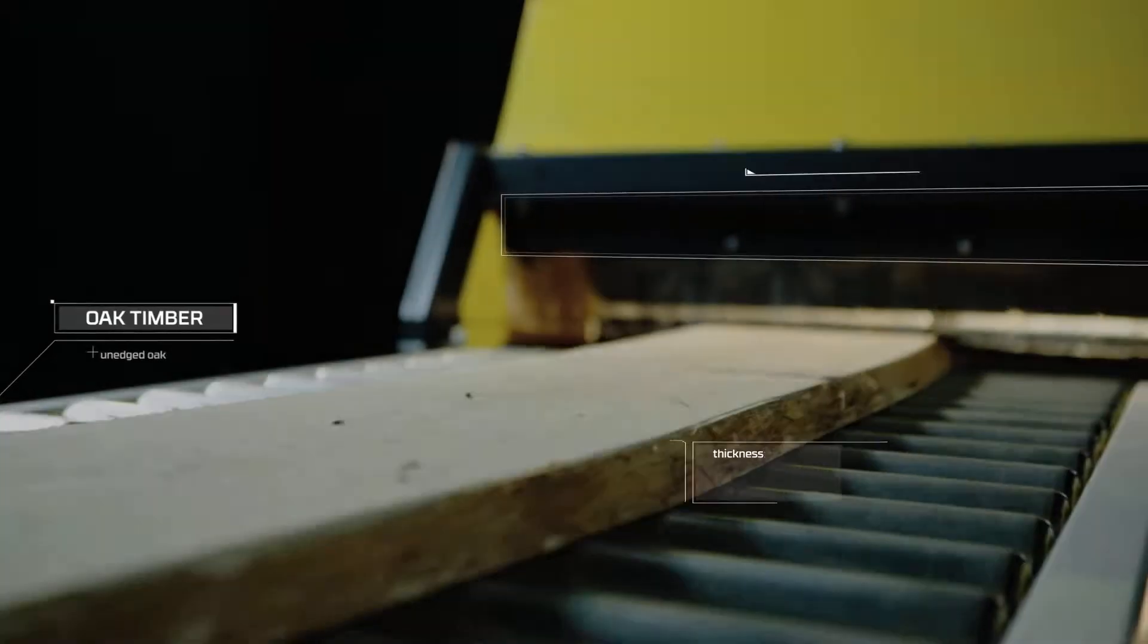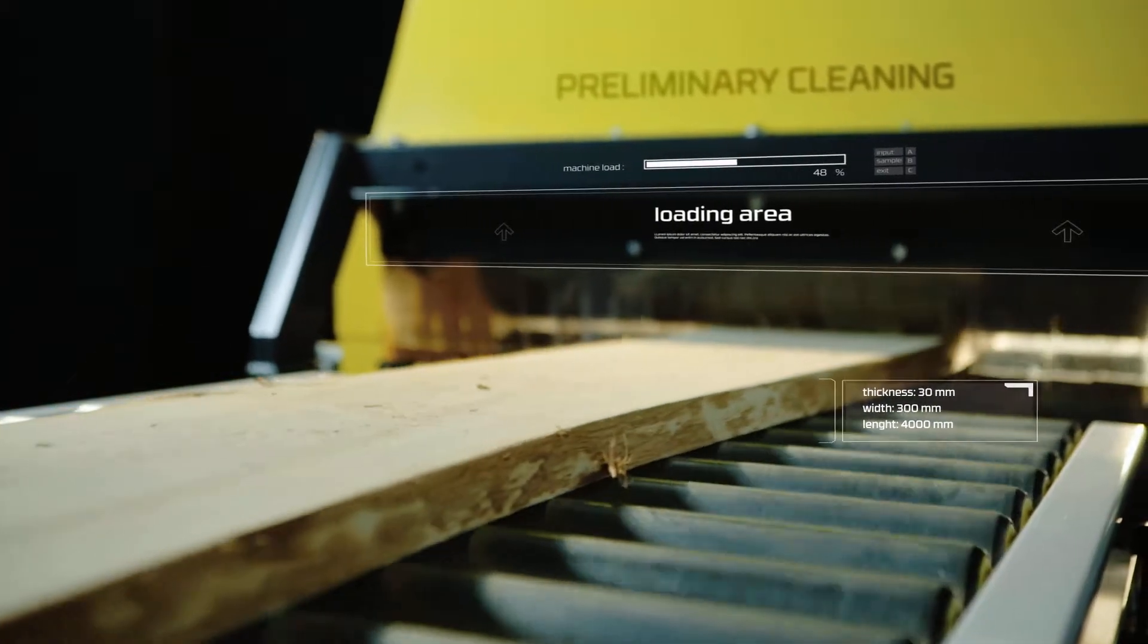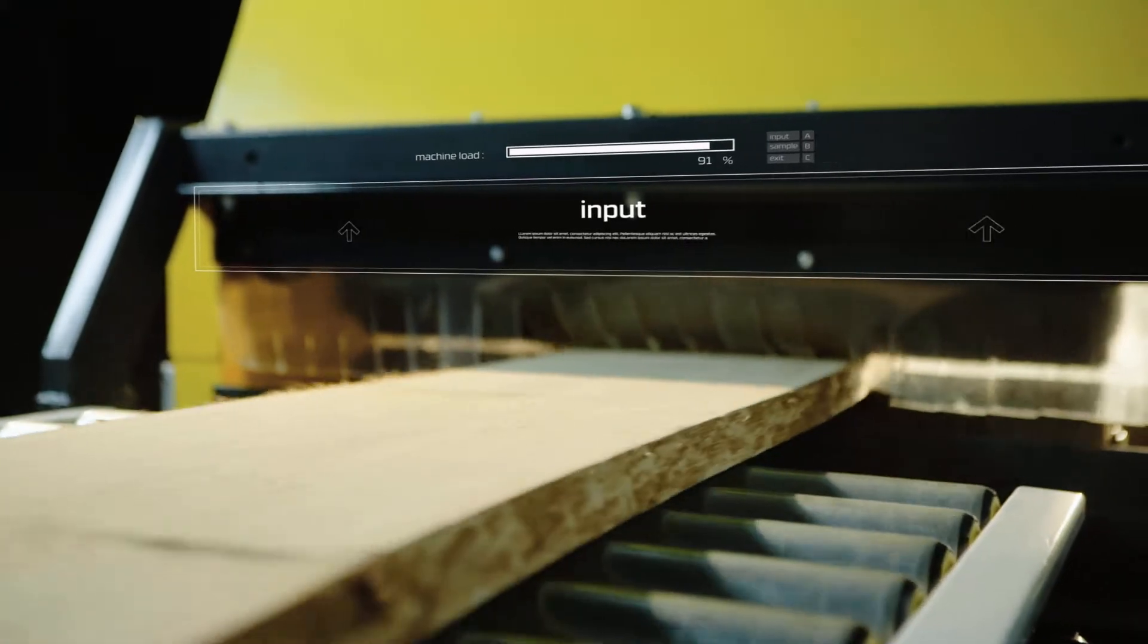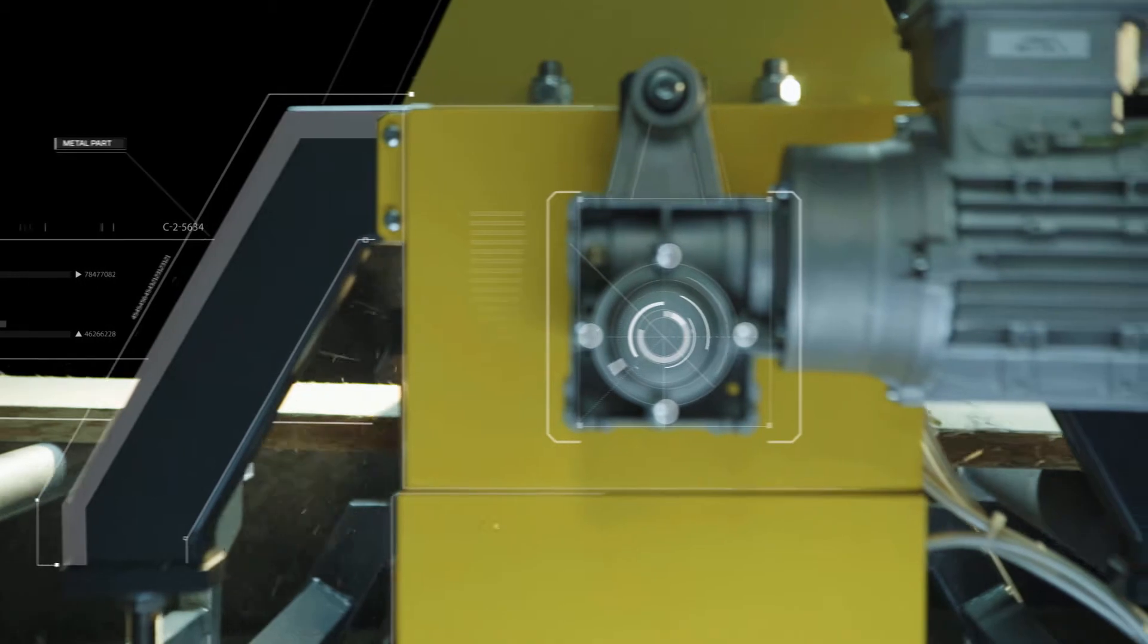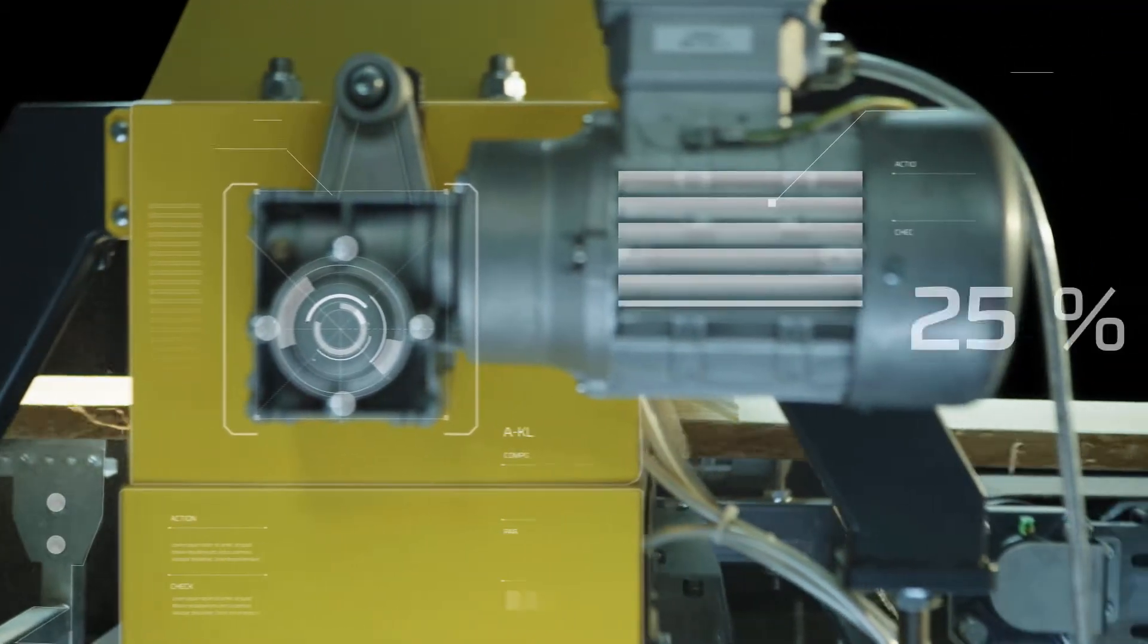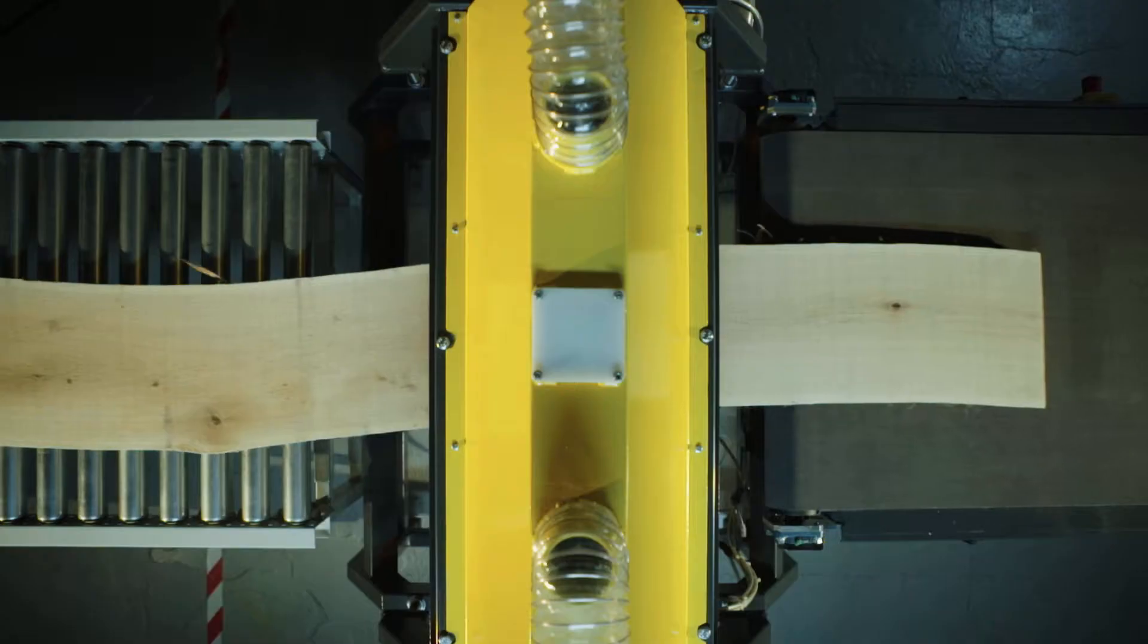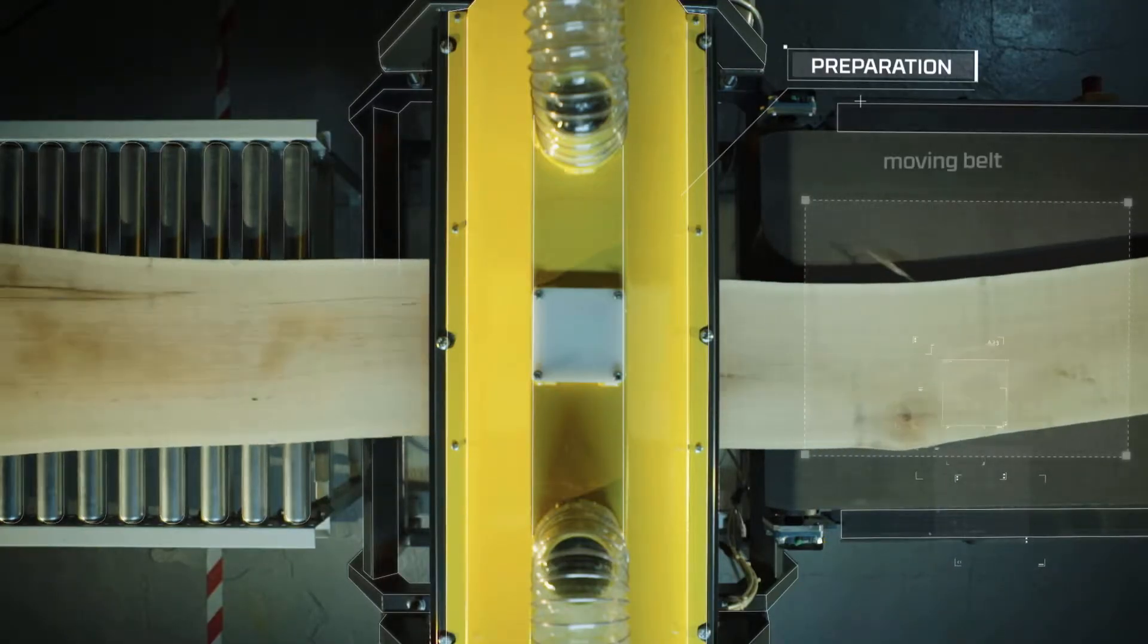Right after primary cutting, fresh 30 millimeter thick unedged oak timber continues on a conveyor line to a cleaning machine. This process is crucial since it ensures highly efficient and accurate scanning and evaluation of the wood.